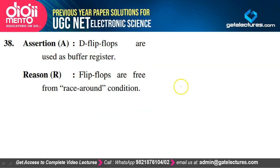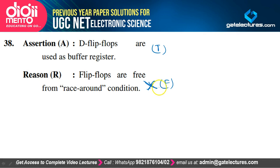D flip-flops are used as buffer registers — true. Flip-flops are free from race-around conditions — false. All flip-flops have race-around conditions; that is why we use master-slave flip-flops to circumvent them. Option C is the correct option.